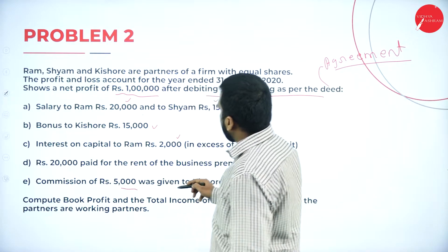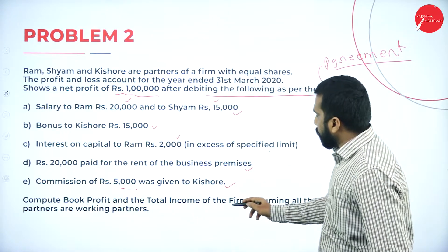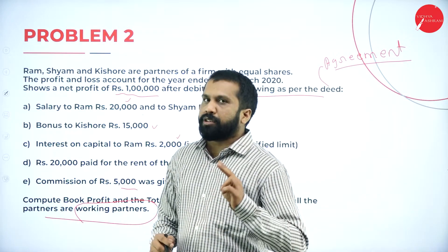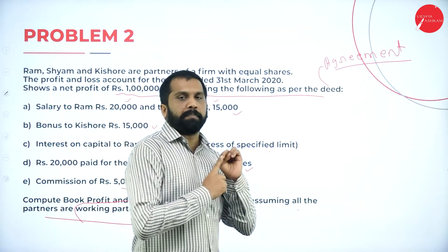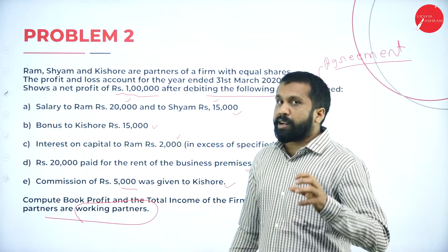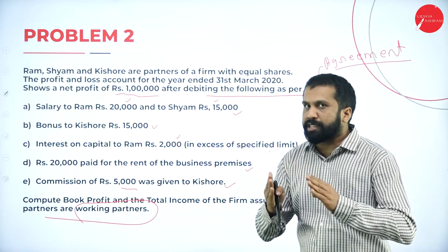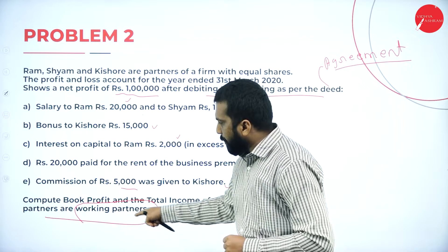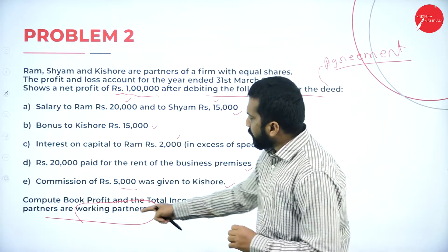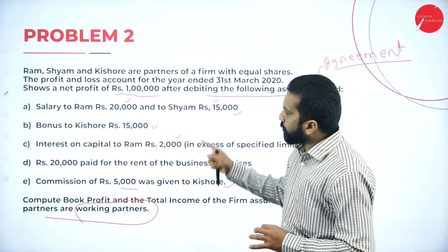Commission of rupees 5,000 was given to Kishore. The question asks us to compute book profit and the total income of the firm, assuming all partners are working partners. There are two types of partners: working partners and sleeping partners. A sleeping partner is not actively involved in the business. If all are working partners, there are no changes — no conditions — same as the previous problem.